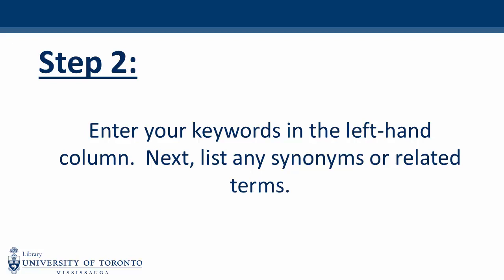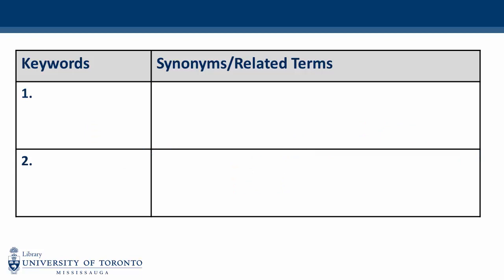Now that we've identified our keywords, we'll move on to step two of the worksheet, which asks us to list our keywords and brainstorm synonyms or related terms. It is important to add synonyms and related terms to your search because databases and the library catalog will not automatically include them. The second step asks you to list your keywords on the left-hand side of the table.